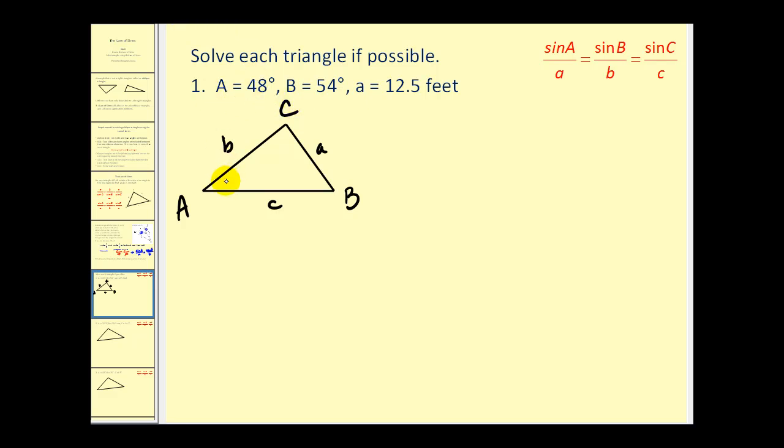Let's go ahead and record the given information. Angle A is 48 degrees, angle B is 54 degrees, and side A is 12.5 feet. Okay, before we get too excited and try to use the law of sines, we should take another look at this triangle. We know the sum of the interior angles must equal 180 degrees. So we can find the measure of angle C since we know that C plus 48 degrees plus 54 degrees must equal 180 degrees. So the measure of angle C is equal to 78 degrees.